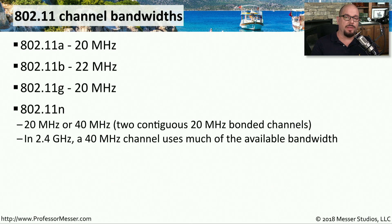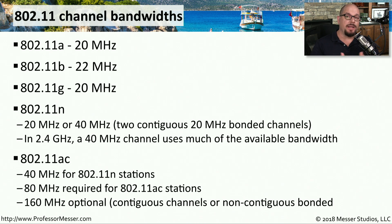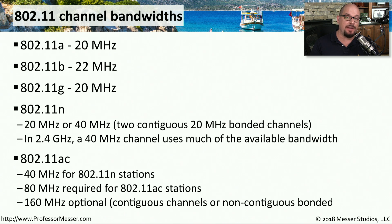There is limited bandwidth available at 2.4 gigahertz, so bonding together and creating a 40 megahertz channel uses most of the available bandwidth. With 802.11ac, you're running in the 5 gigahertz frequency range, which gives you much more bandwidth available. If you're running 802.11n stations on an 802.11ac network, you can use the 40 megahertz bandwidths. If you're using 802.11ac networking, then you're using 80 megahertz bandwidths by default, with the option to use 160 megahertz bandwidths.